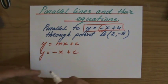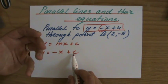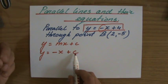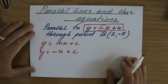It also goes through point B. How do I find the y-intercept? I find that by substituting that point in this equation, like I've explained in previous videos.